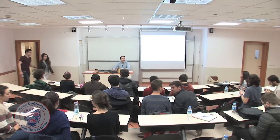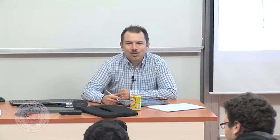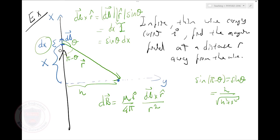Let's review what I was doing. I'm trying to find the magnetic field created by an infinite wire. This time I'm not going to use Ampere's law, which was easy to apply. Now I'm using Biot-Savart law. I need to separate my wire into small parts — a small part that's x away from my origin and has length dx. I'd like to understand the magnetic field created by this small part at distance h away from my wire.